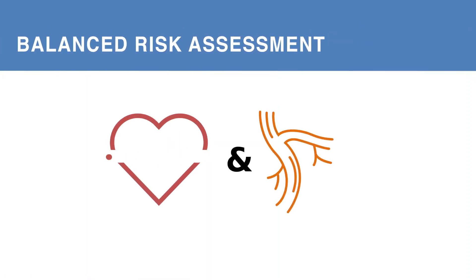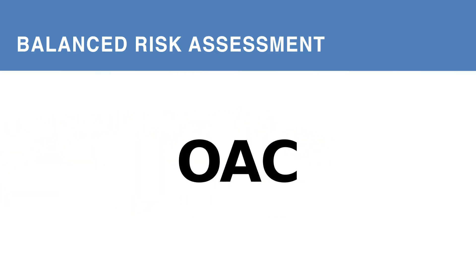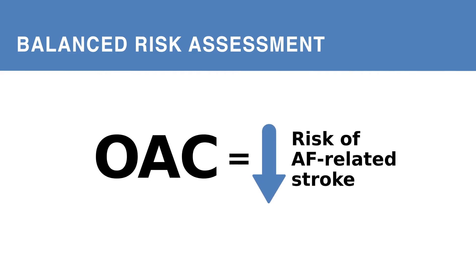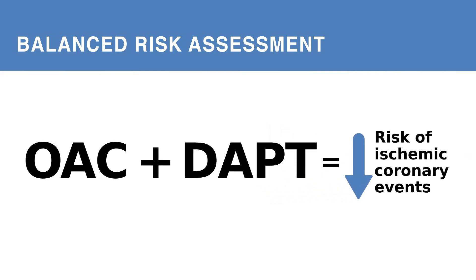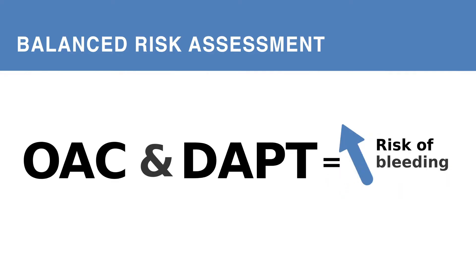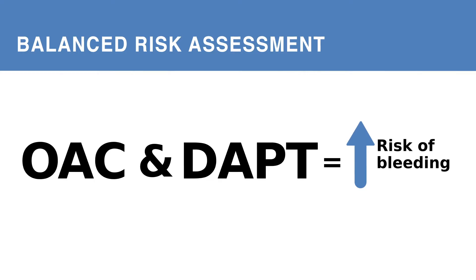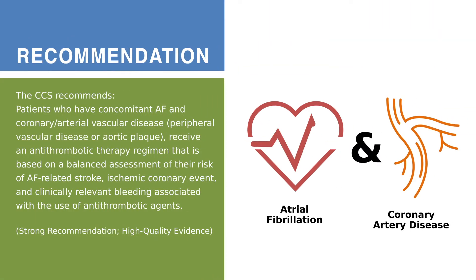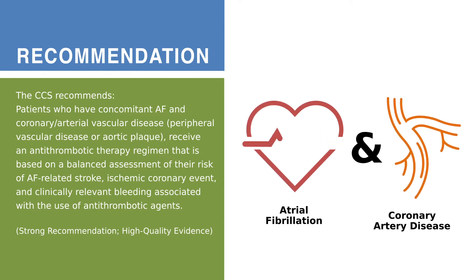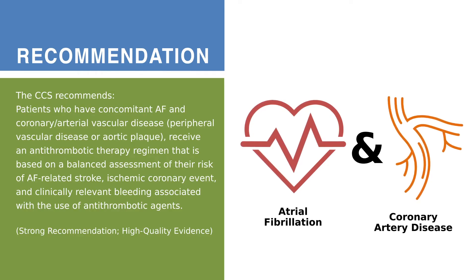Patients with both AF and coronary artery disease or peripheral arterial disease may require a combination of oral anticoagulation to reduce the risk of AF-related stroke, plus antiplatelet therapy to reduce the risk of ischemic coronary events. However, both of these therapies are individually associated with an increased risk of bleeding. Therefore, the CCS recommends that patients who have concomitant AF and coronary or arterial vascular disease, either peripheral vascular disease or aortic plaque, receive an antithrombotic therapy regimen based on a balanced assessment of their risk of AF-related stroke, ischemic coronary event, and clinically relevant bleeding.